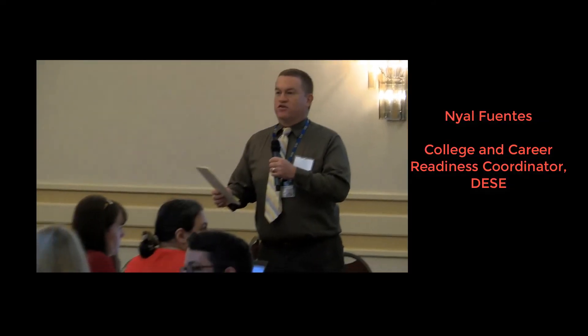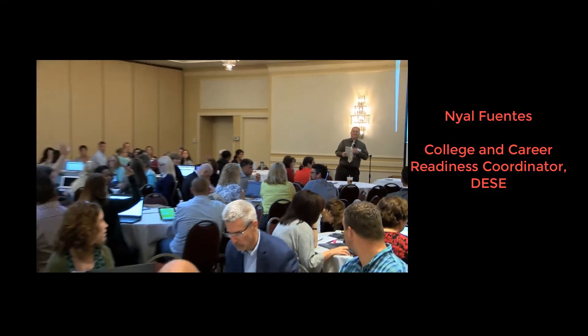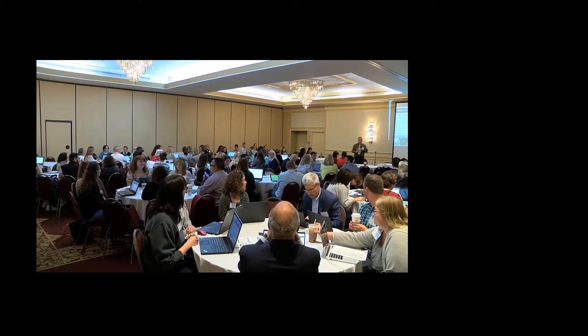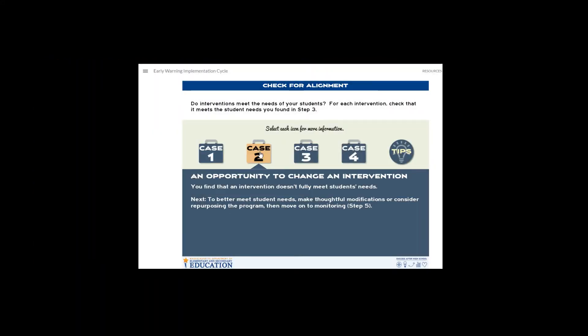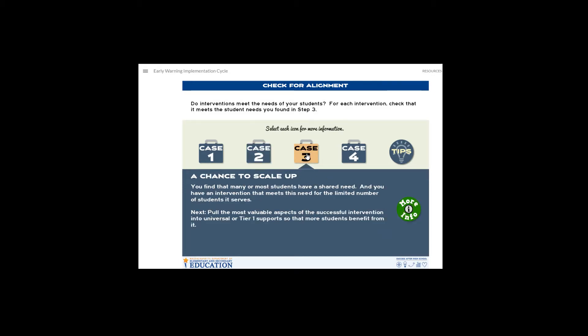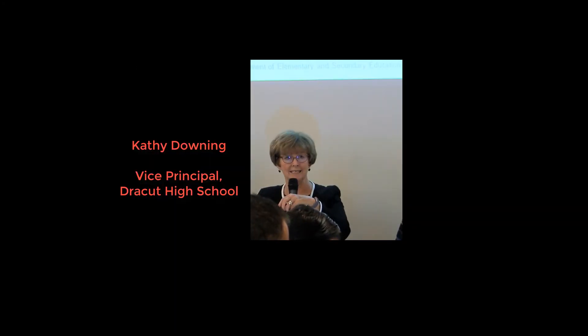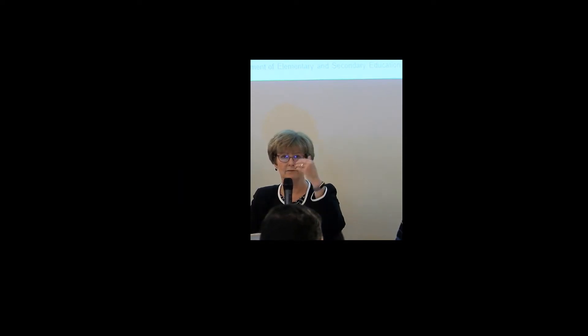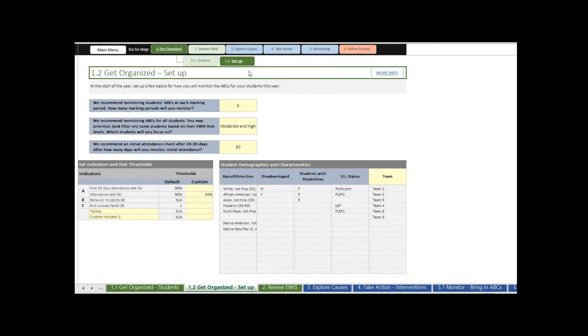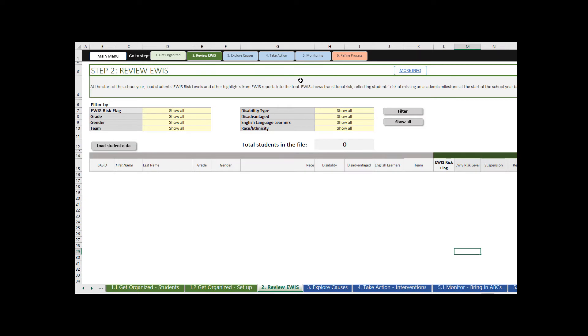eWIS is what we call a predictive analytic. It is not a life sentence for kids — it's not meant to track them. It's meant for us to design interventions based on all the information from eWIS, from your other data, and what you know about your kids. eWIS is just one piece of this. We have a lot of change in practice, curriculum, and instruction that has resulted from what started as a simple spreadsheet with filters for who's not reaching targeted milestones and what can we do to be proactive and support students.